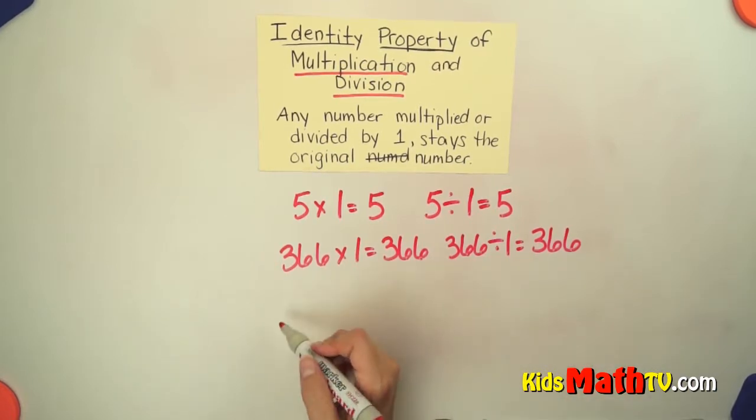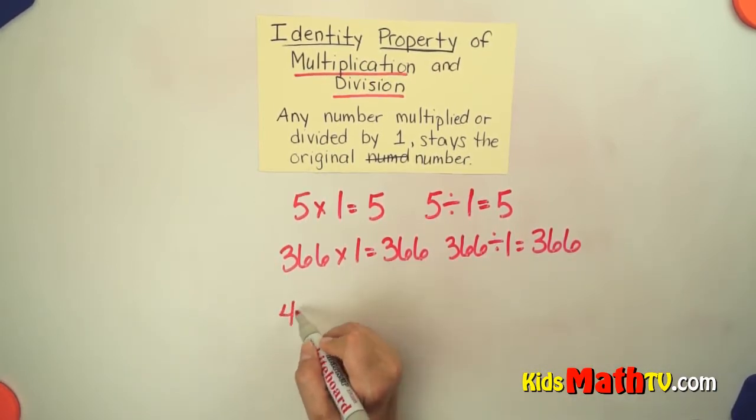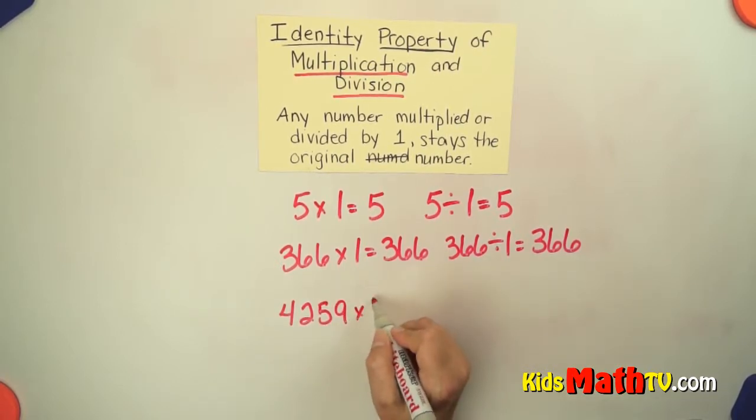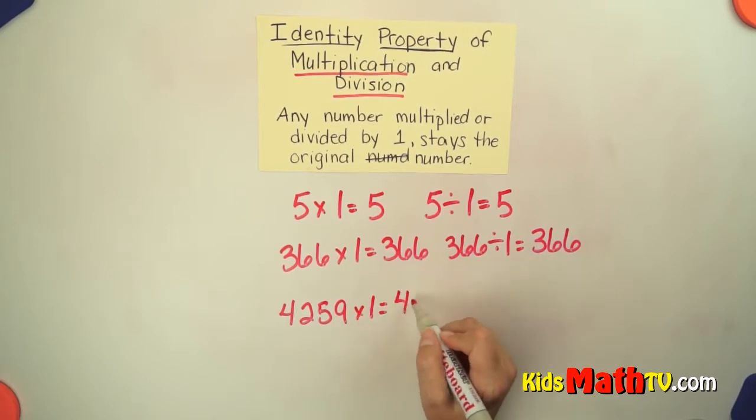You can go super big if you wanted to. 4,259 times one is simply that same number, 4,259.